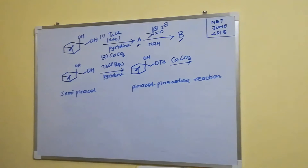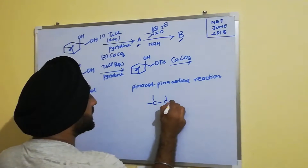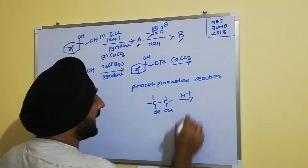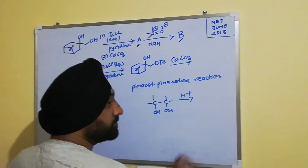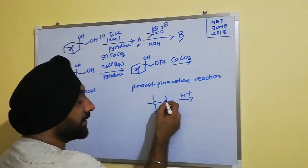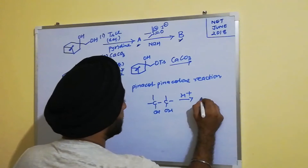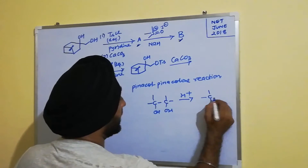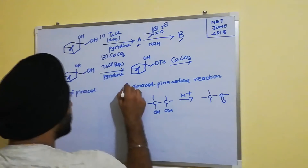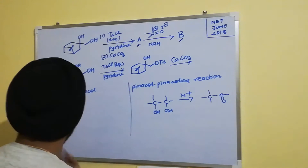In the pinacol-pinacolone rearrangement, we have 1,2-diols which when treated with an acid undergo rearrangement where one of the groups from one carbon migrates to the adjacent carbon, leading to the formation of a ketone. We also observe ring expansion or ring contraction in this rearrangement.